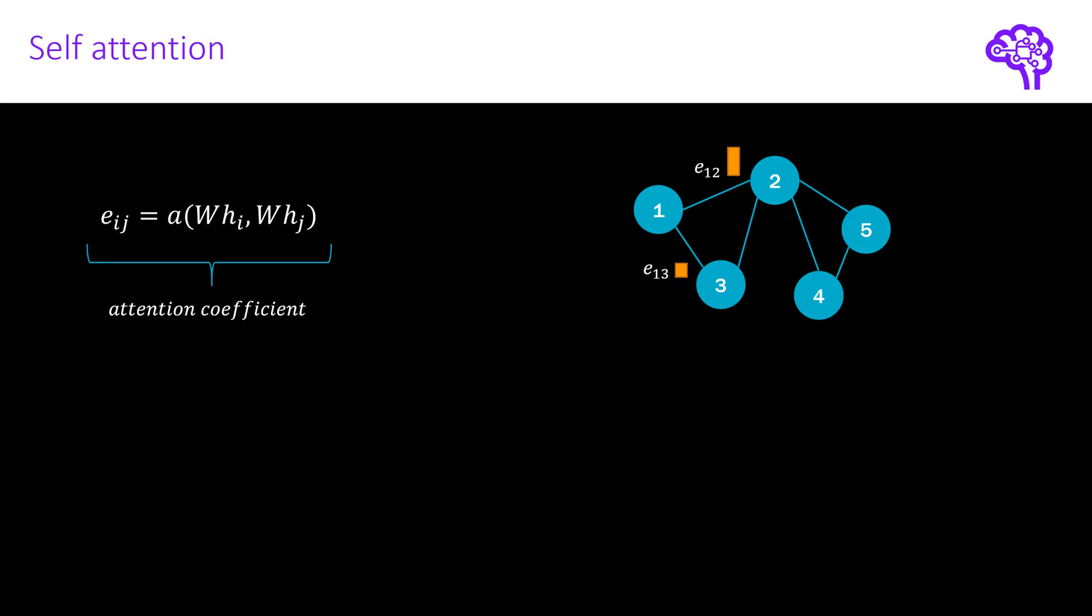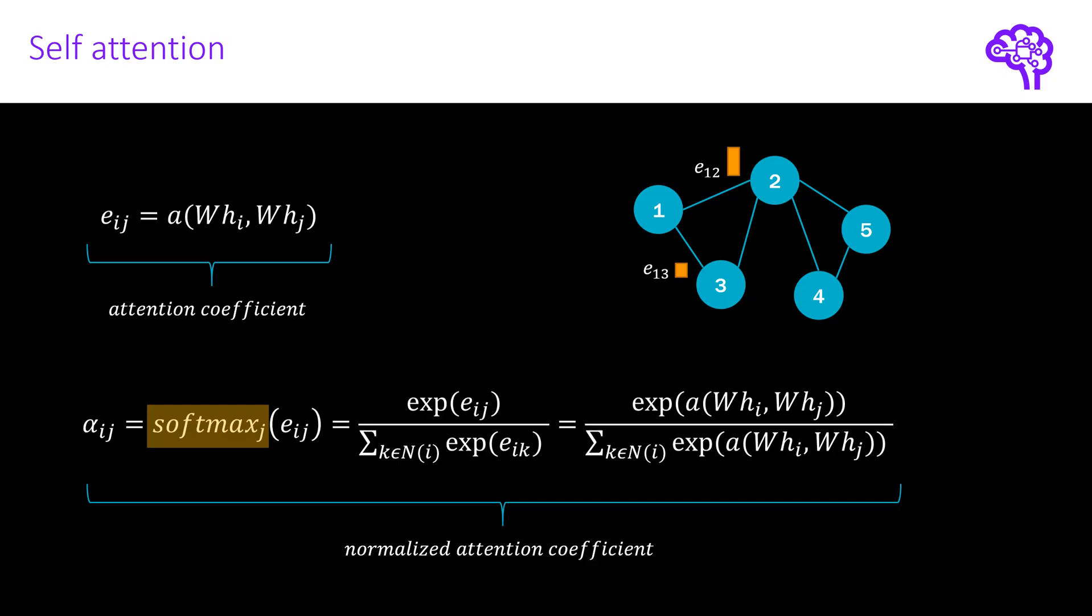First, however, let's take a look at one more thing that is usually done in self-attention. If we calculate these attention coefficients, we might get very different values for different nodes. For example, for node 1 and its neighbors, the values are 0.5 and 0.7. For node 4 and its neighbors, we might get values of 6 and 10. In order to compare these values for different nodes, we need to normalize them. And this is simply done using the softmax function.